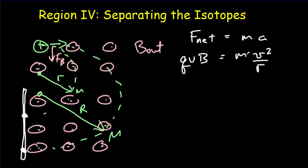That means we're going to be able to solve for the mass. We can cancel out the V. The mass is going to be proportional to R, and the proportionality constant will be QB divided by V.